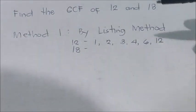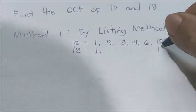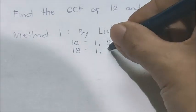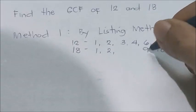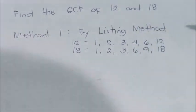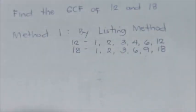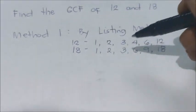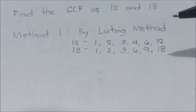How about 18? 1 times 18 is 18, 2 times 9 is 18, and 3 times 6 is 18. So, the factors of 18 are 1, 2, 3, 6, 9, and 18.